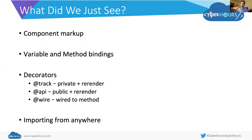So what did we see in all this? First, more component markup — more tags. More variable and method binding. We talked about all three decorators: @track, which makes it private and re-renders it; @api, which makes it public and re-renders it; and @wire, which lets you wire it to a method and gives it .data and .error properties. And we can import from anywhere: from the LWC namespace, from other Salesforce namespaces, custom components we build, from our data model, our objects, our fields, and Apex controllers. Pretty much anything we want to import, we can bring it into our Lightning Web Components.